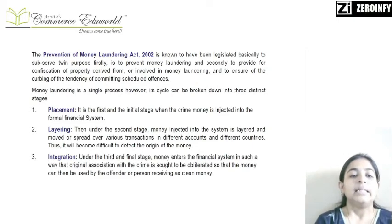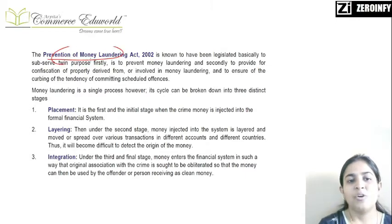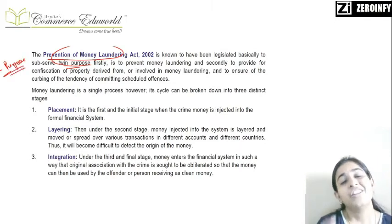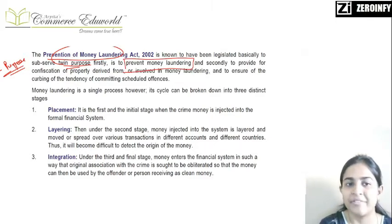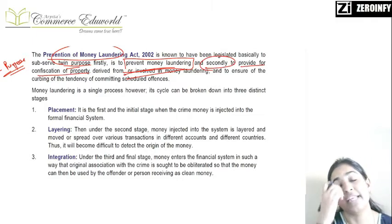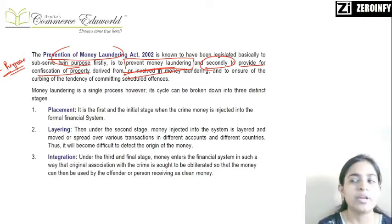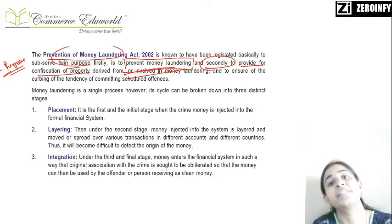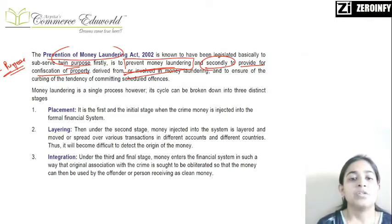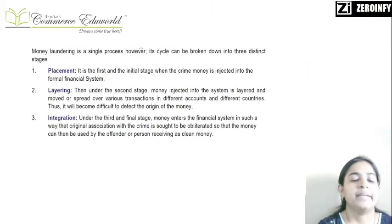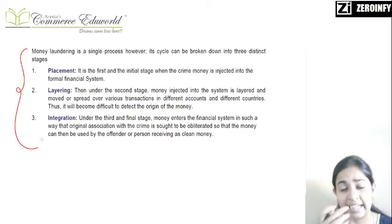The Prevention of Money Laundering Act has two purposes. The first purpose is we are going to prevent money laundering. And secondly, we are going to provide for confiscation of property - the property which has been derived from money laundering. If any illegal assets have been purchased or any amount earned from money laundering has been used for purchasing assets, those will be confiscated. So the two purposes are: first, to prevent money laundering, and second, to carry out confiscation.